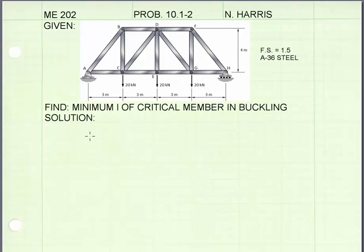The first thing I need to do is find the reaction forces at A and H. Because this is a symmetric bridge with symmetric loading, we know that the resultant forces will be equal at A and H. If we take the total load on the bridge, 60 kilonewtons, and split it two ways, each of the supports will take 30 kilonewtons.